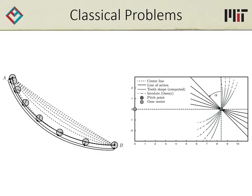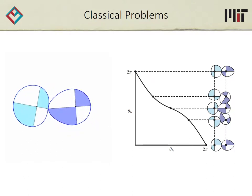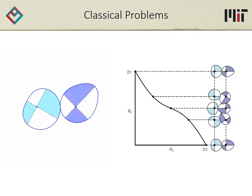We validate our technique by applying it to various classical design problems with known analytical solutions. The rolling brachistochrone and the shape of an involute gear tooth can be described as solutions to shape-motion design problems. Our solutions match the analytical solutions, giving us confidence in our approach. We've also applied our technique to the problem of finding a pair of gear shapes that satisfy some desired transfer function between the gears.